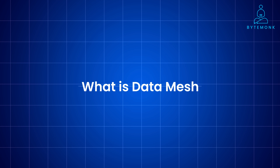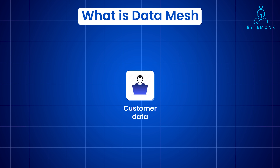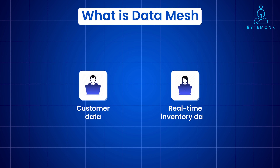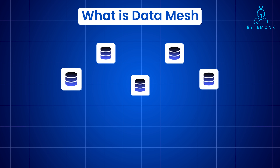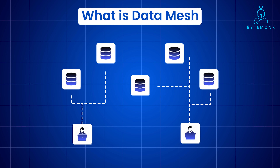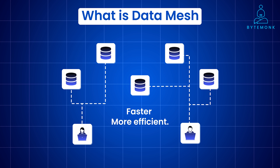So what exactly is a data mesh? Imagine your marketing team needing customer data for targeted campaigns, or your sales team needing real-time inventory data to close deals faster. With data mesh, these teams can access and utilize the data they need without relying on a central data team. Data mesh isn't just about speed — it's also about data quality and governance. It's like having multiple filing cabinets organized by department, where each department owns its data, cleans it up, and makes it easily accessible to others.